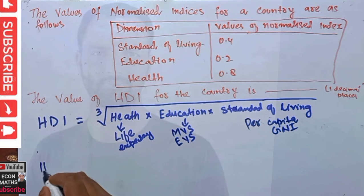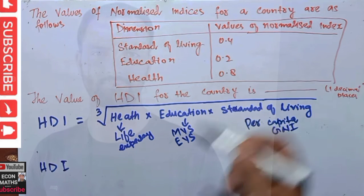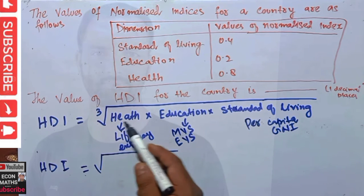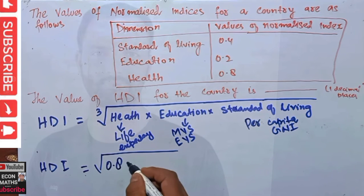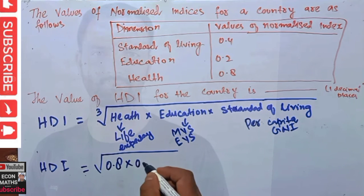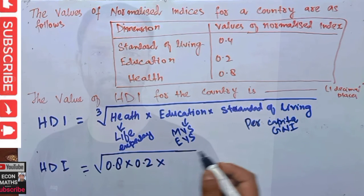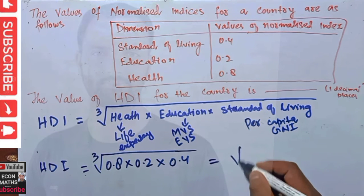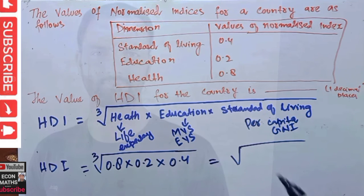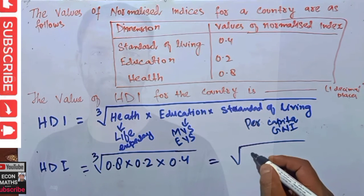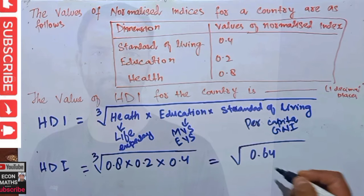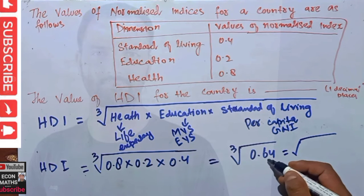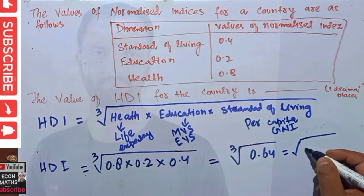Since we are given the values in normalized form, we just take the cube root of the product. For health we have 0.8, for education we have 0.2, and for standard of living we have 0.4. So this comes out to be the cube root of 0.8 × 0.2 × 0.4. Computing: 2s are 16, 4s are 64, so we get 0.064, and we take the cube root.